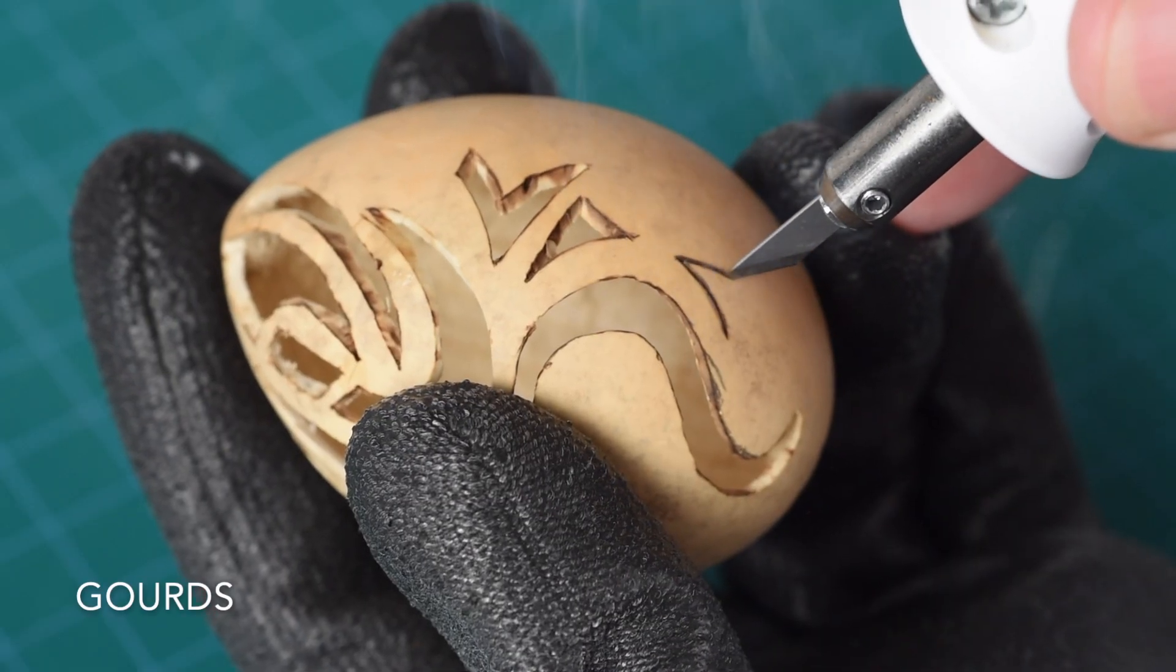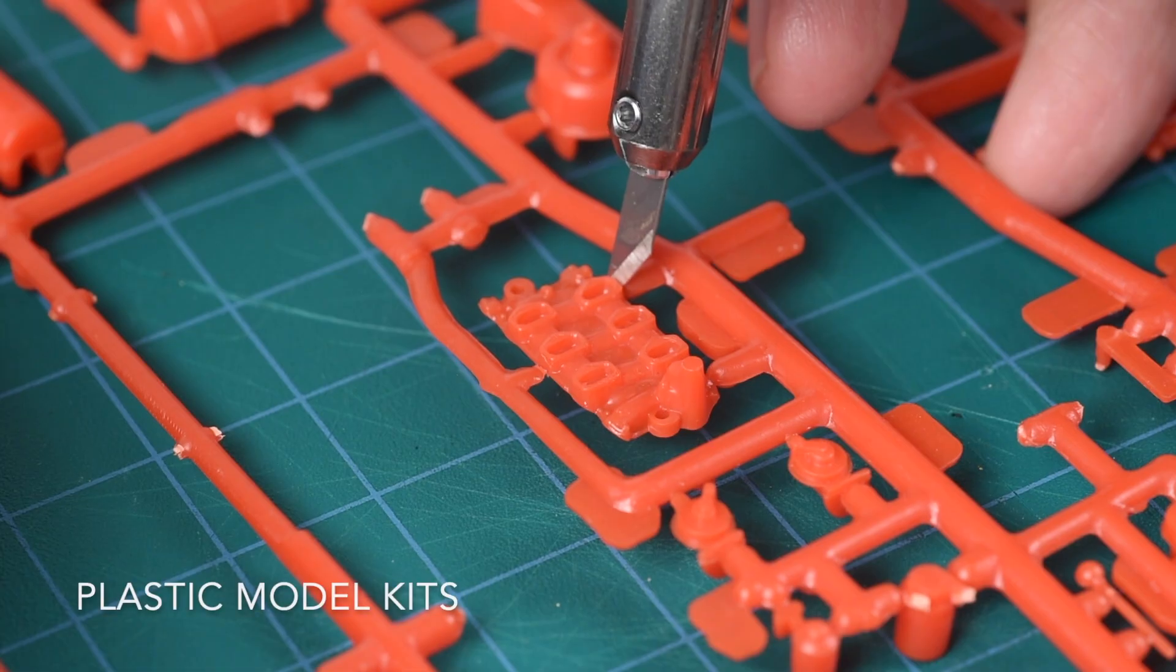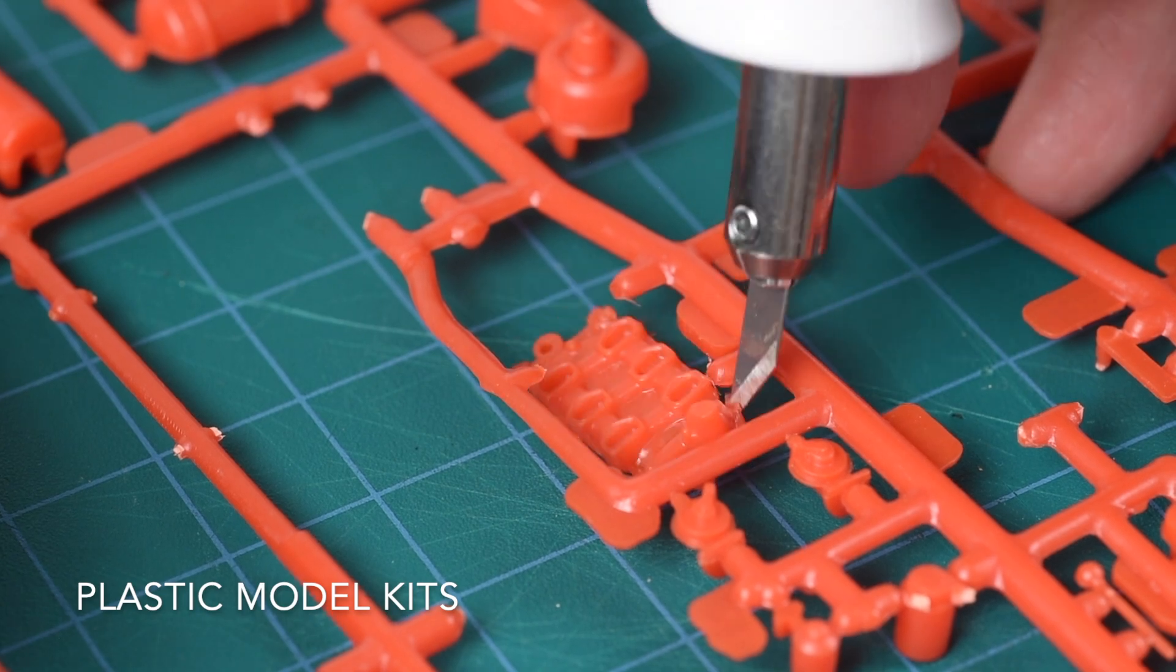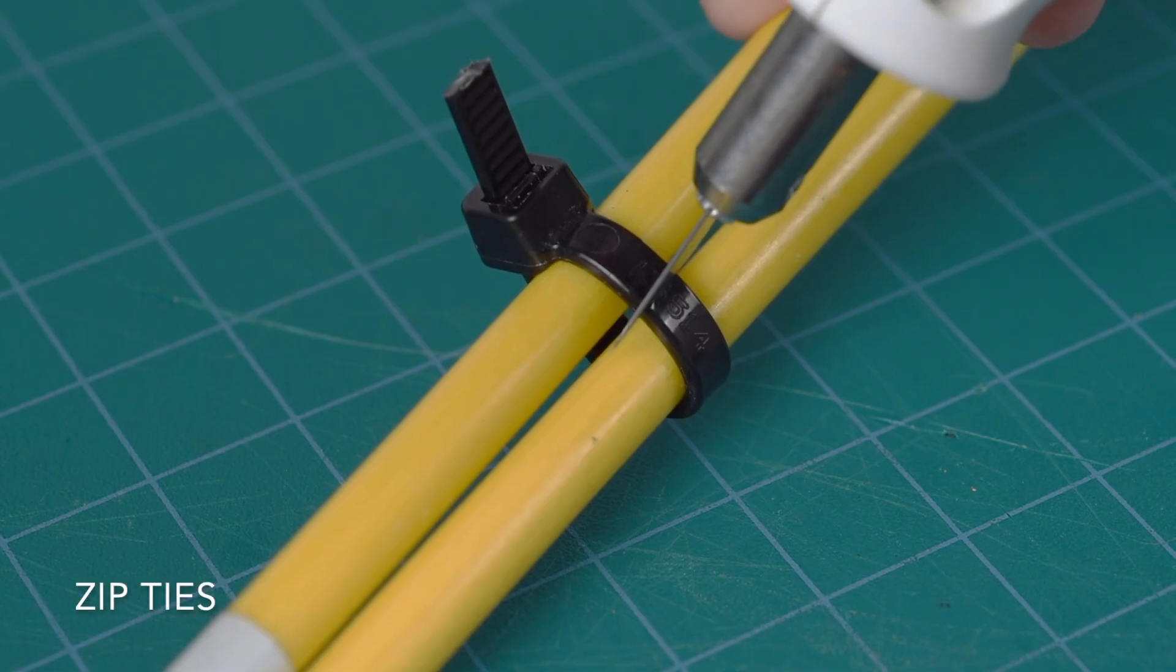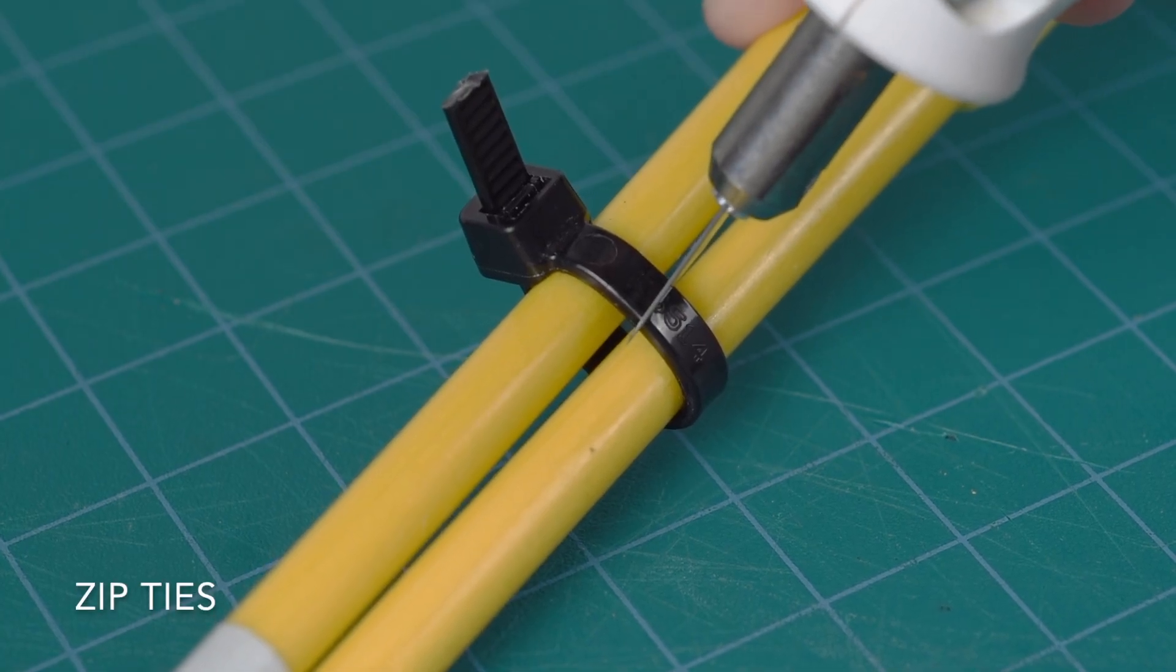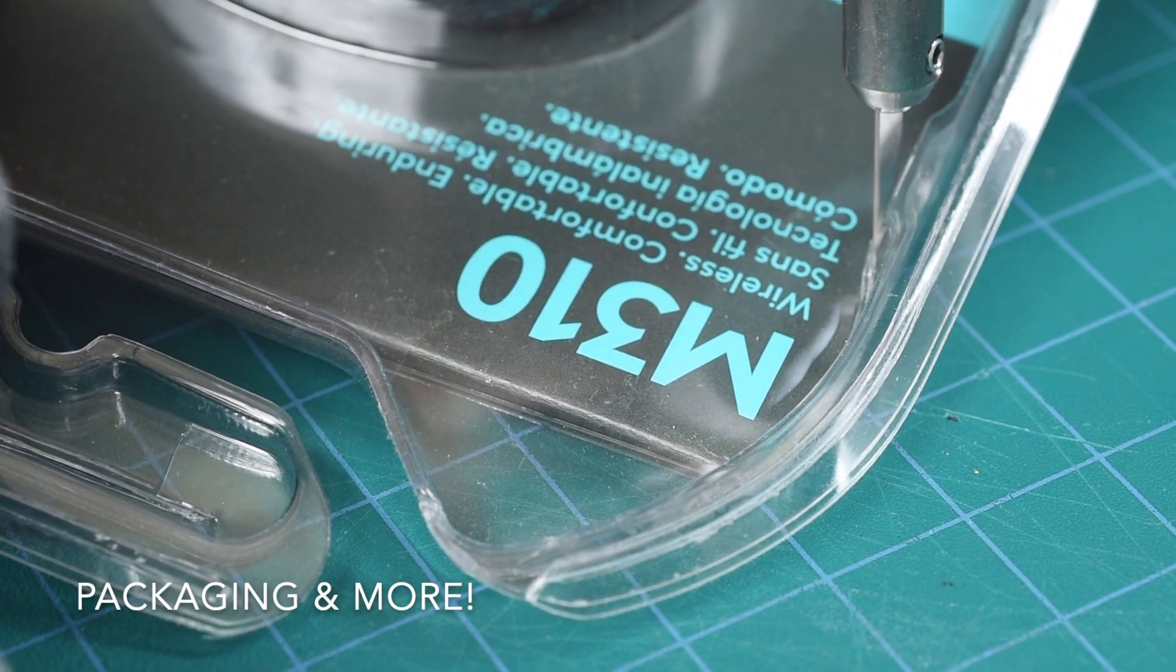Cork, gourds, plastic model kits, zip ties, packaging, and more.